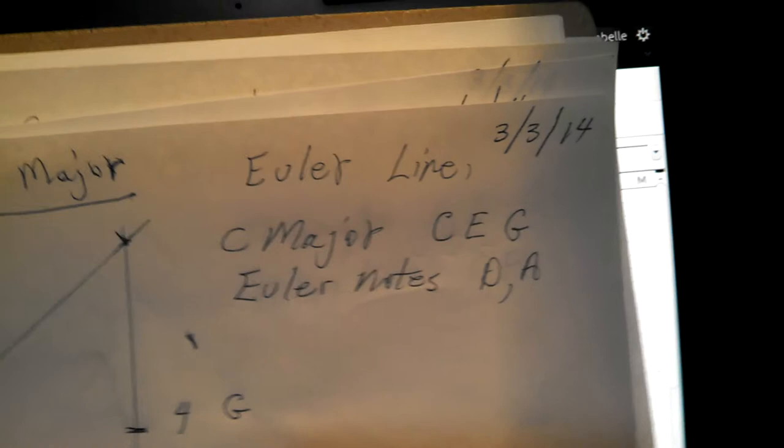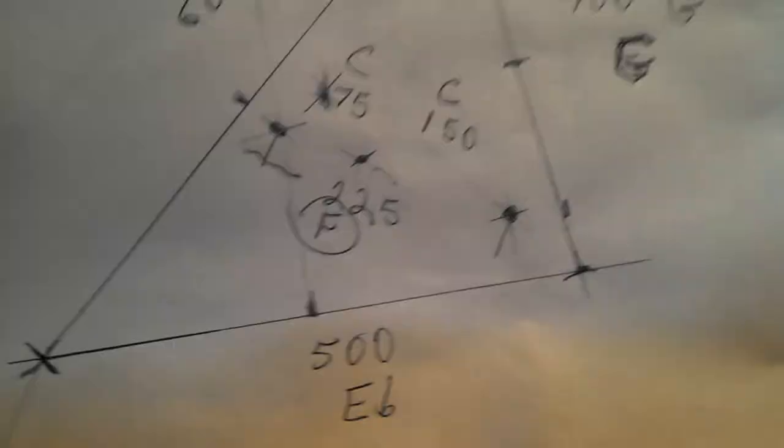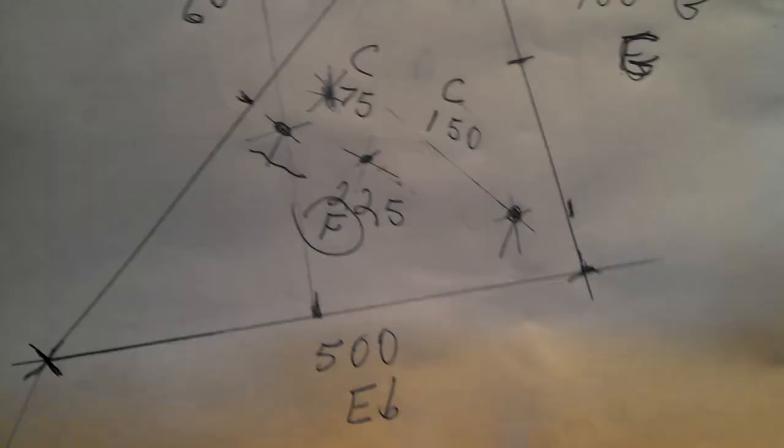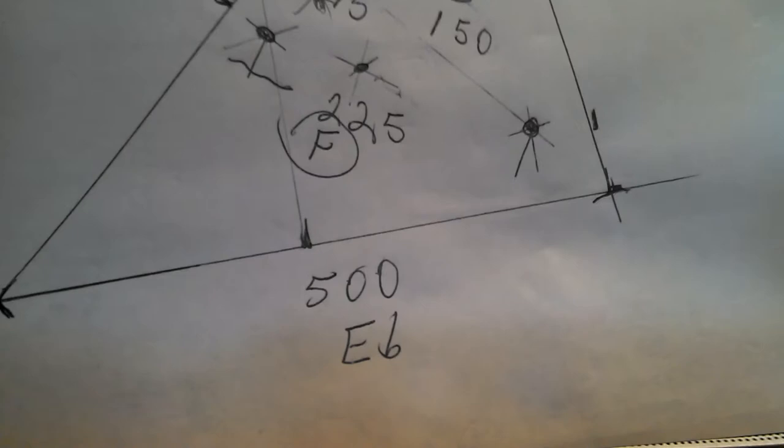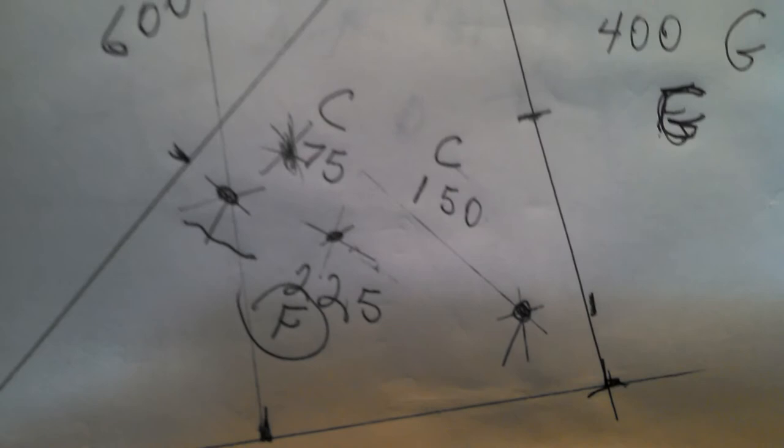Now I have two others. I have a C minor. C minor ends up with a C using six inches as the base. The G ends up being the same, it's four inches, but the E flat, which is the flatted third, ends up being five inches. And the Euler notes end up being C and F, C in two different octaves and F as the overall of the two dots.